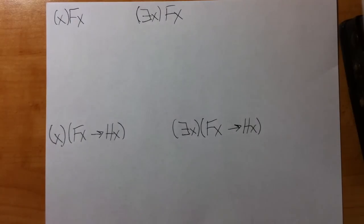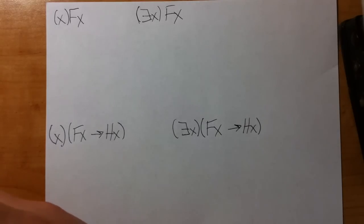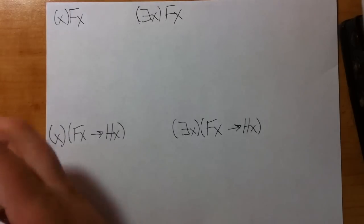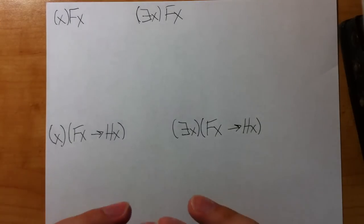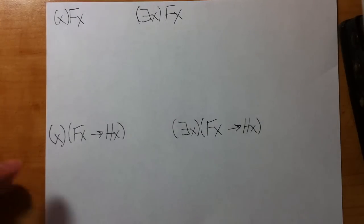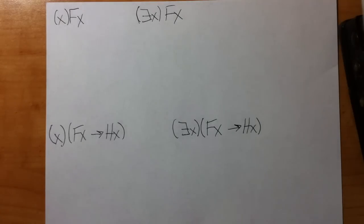This is 9.2, Demonstrating Invalidity. It's basically the same process as truth tables from the first test, but in addition to doing truth tables we have to do something to get ready — and that new something is expanding. So the first thing we're going to talk about is expanding a quantified statement, and then we're going to talk about how to do the truth table.